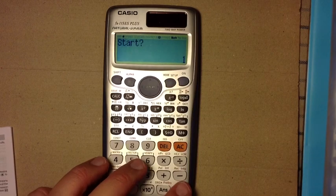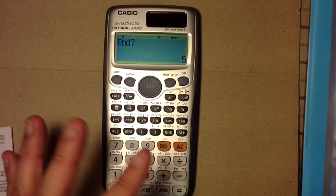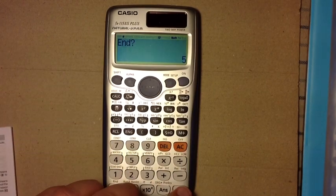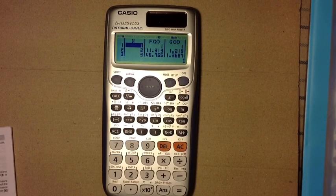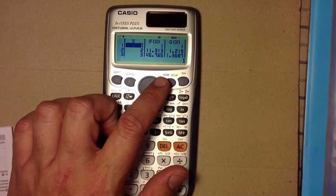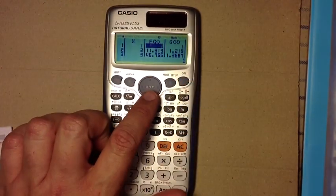It'll ask me for my start, I'll just say 1, I'll accept the ending value as the default, 5, and step 1. Casio will give you the values for both f of x and g of x.